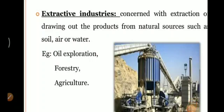Second, Extractive Industries — the most important — are concerned with the extraction or drawing out of products from natural sources such as soil, air, and water. Examples: oil exploration, forestry, agriculture. With pharmaceutical help, we also extract active ingredients for the manufacturing of different dosage forms. Extractive industries में कोई भी natural पेड़-पौधे, मिट्टी, या हवा से active constituents निकाल कर pharmaceutical dosage forms बनाते हैं।